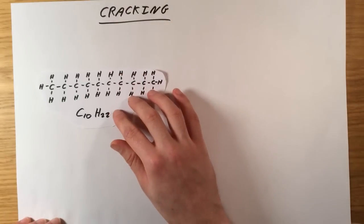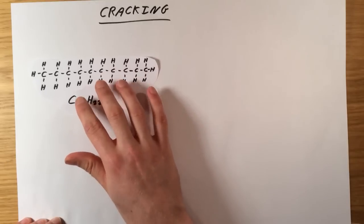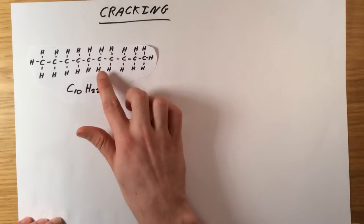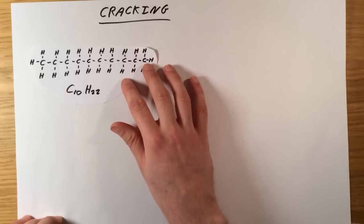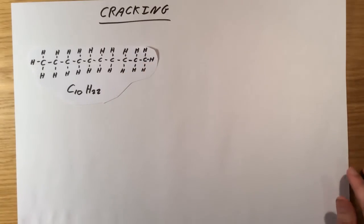So this isn't a particularly long hydrocarbon chain. This one would be quite flammable. But let's imagine I took this one here, which has got 10 carbon atoms and 22 hydrogens. It's an alkane.